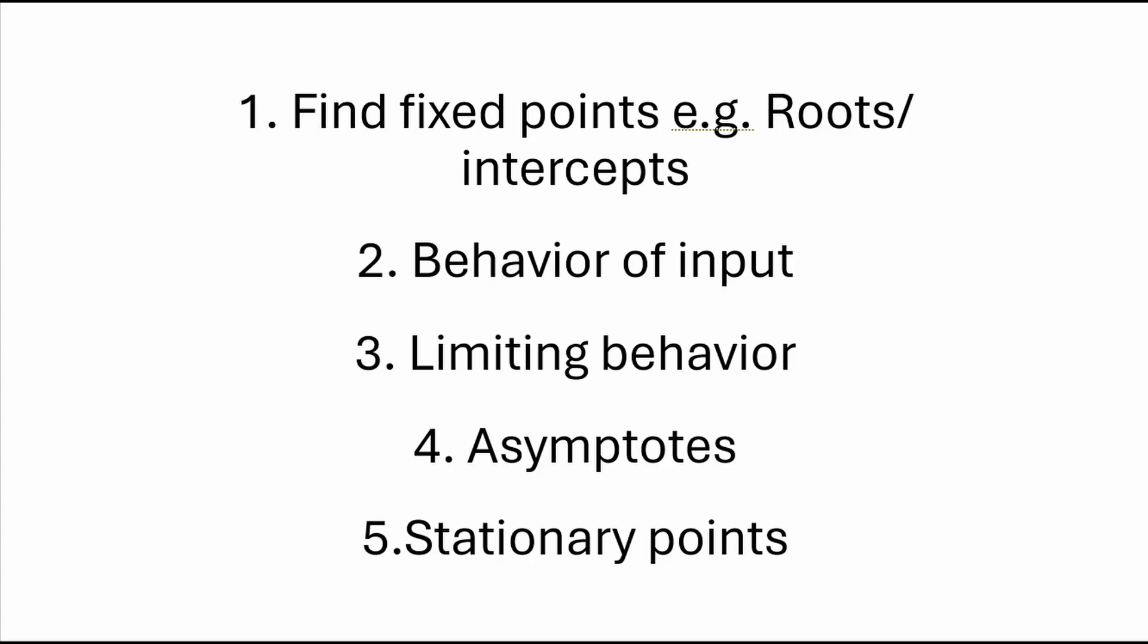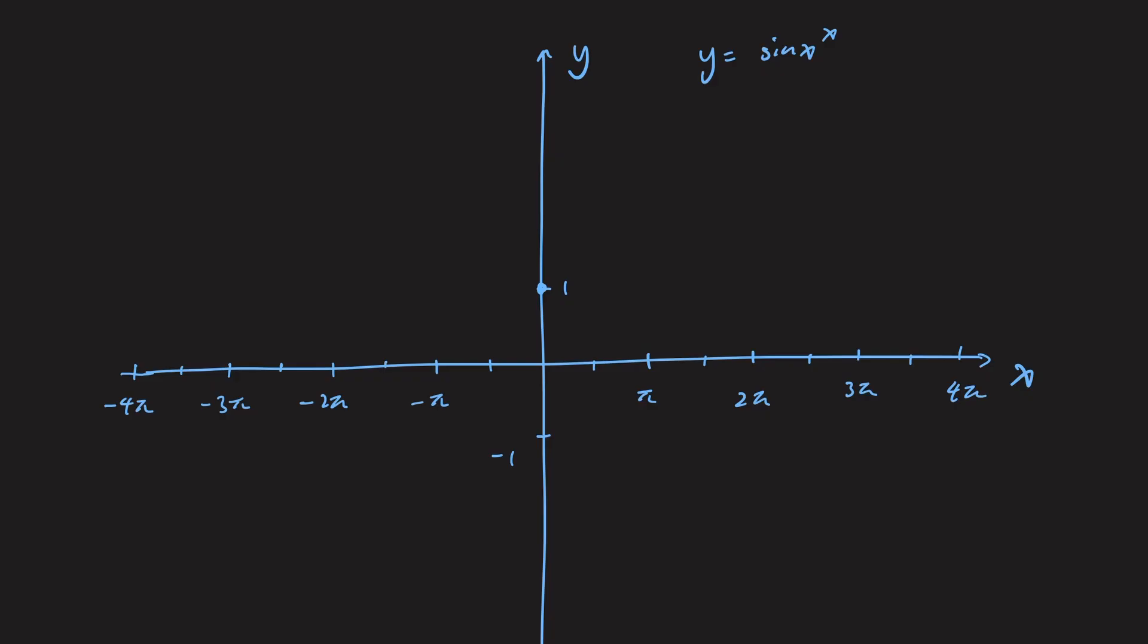First step, find fix point. The obvious choice is to consider what happens for x is 0 and for multiples of pi. For x equal to 0, sin x to the power of x is 0 to the power of 0, which is 1. Let me know in the comments section if you want an explanation to why that is, or try figuring it out.